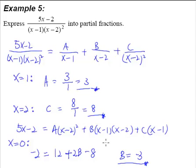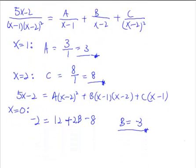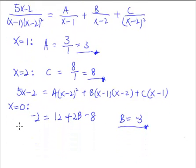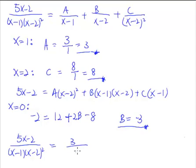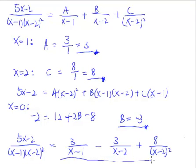And therefore, we're going to present our final answer. We need more space. So let's scroll up a little bit. Finally, we can say that this fraction, 5x minus 2 over x minus 1 times x minus 2 square, can be expressed into a partial fraction like this. So there will be 3 over x minus 1 minus 3 over x minus 2 plus 8 over x minus 2 square. So this is the solution, the answer to the partial fraction questions.